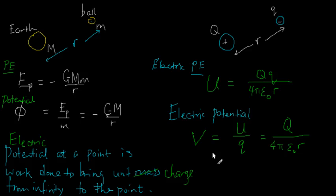I've talked about how potential is the work done to bring unit mass or charge from infinity to a point. By the way, the unit for gravitational potential is joules per kilogram since it's work done per unit mass. But the unit for electric potential is work done per unit charge, so it would be joules per coulomb.